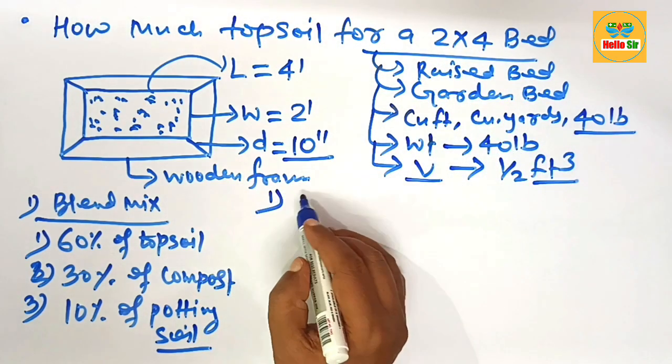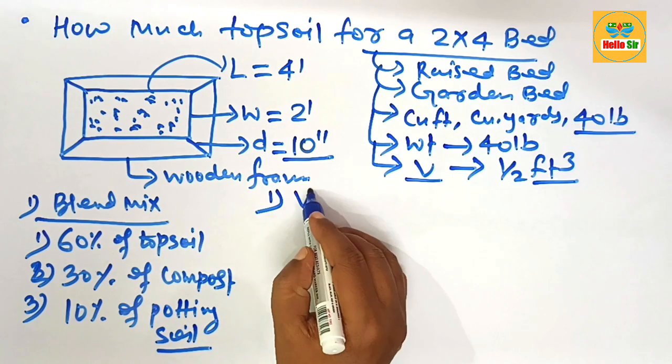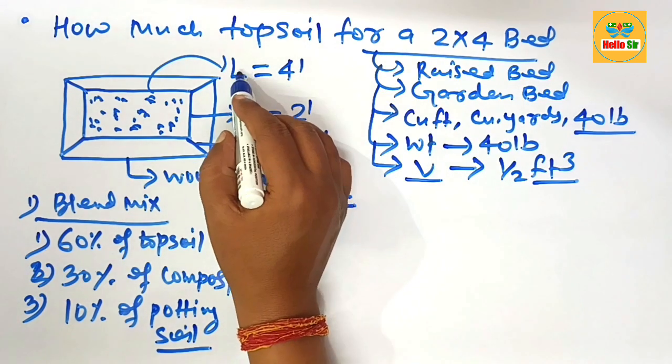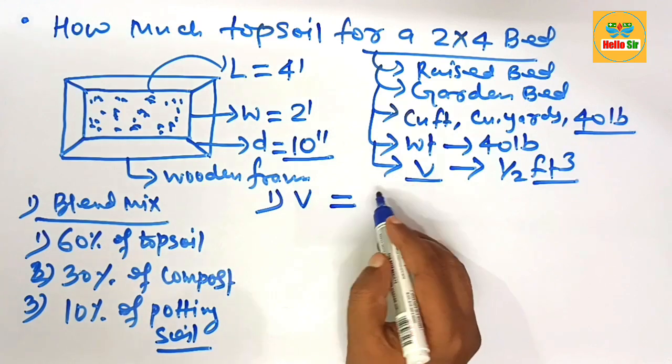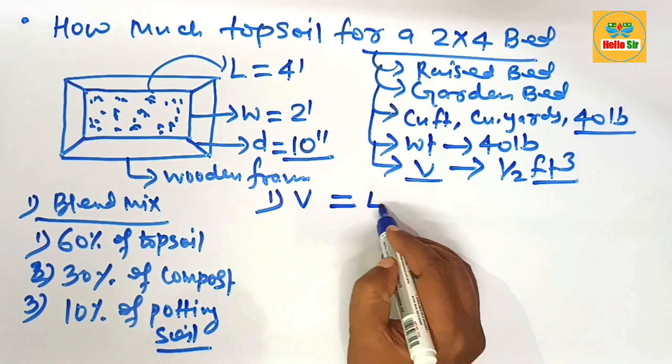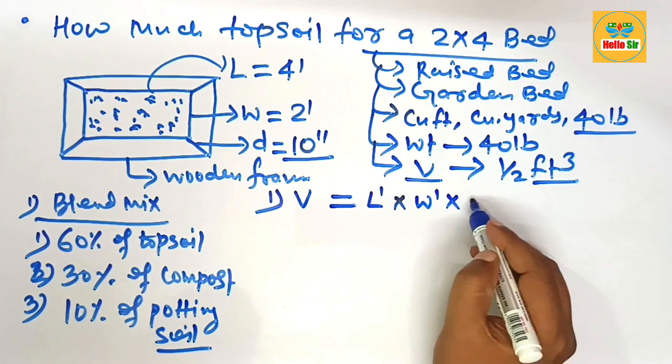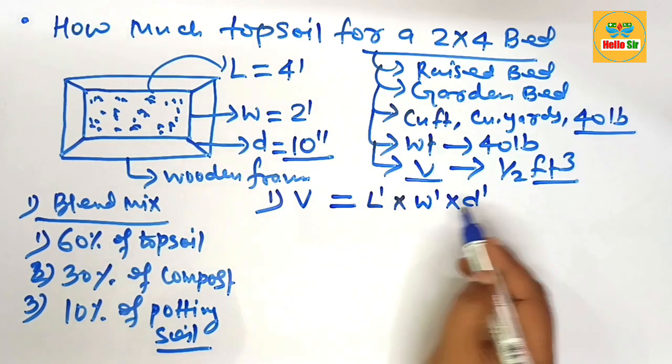First we calculate the volume of topsoil needed in cubic feet. How do we calculate? You just multiply the length, width and depth of soil. That is length in feet, width in feet, multiply depth of soil in feet.